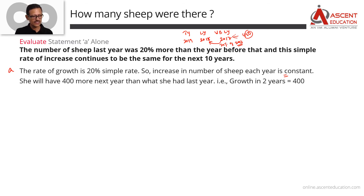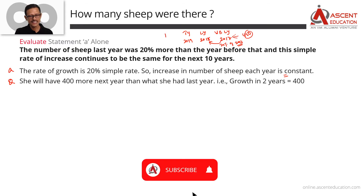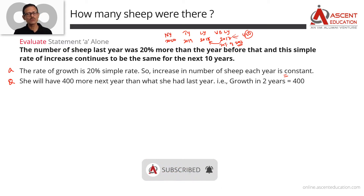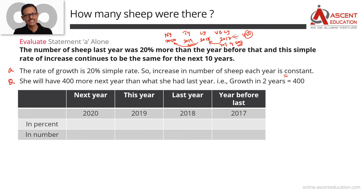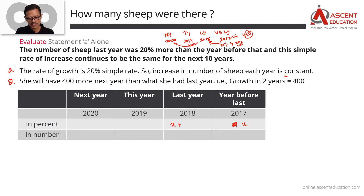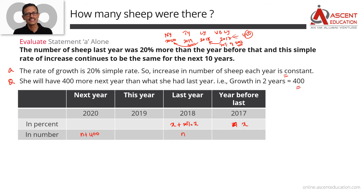From the question we also know: she will have 400 more next year (2020) than what she had last year (2018). Let's draw a table. Say she had x sheep in 2017. In 2018, she would have x plus 20% of x. If in 2018 she had n sheep, then in 2020 she will have n plus 400. Since the increase each year is the same constant, a two-year increase of 400 means the annual increase is 200.